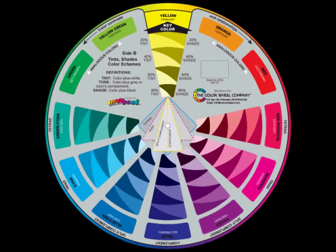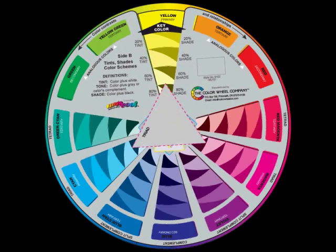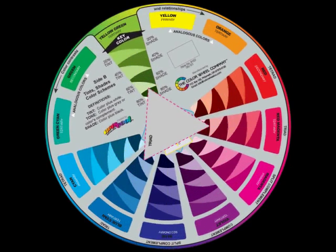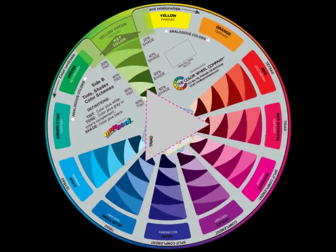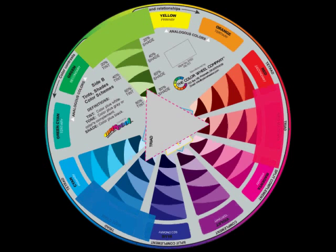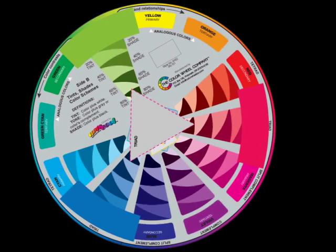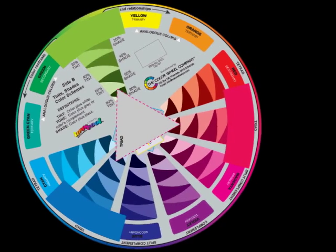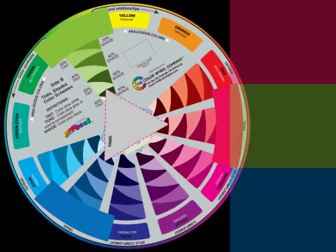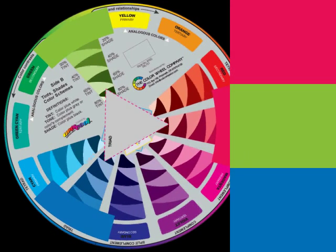To find a triad, point the key color arrow to any color — for instance, yellow-green. Each corner of the triad shape points to another color: blue-cyan and red-magenta. A triad relationship of colors is fairly simple, and the colors brighten each other.